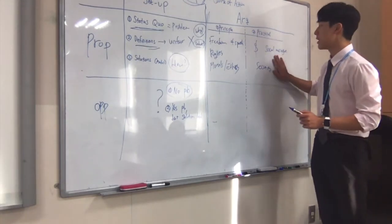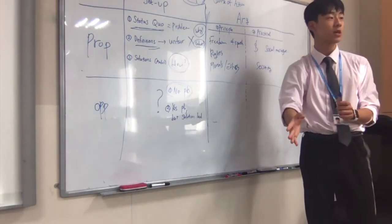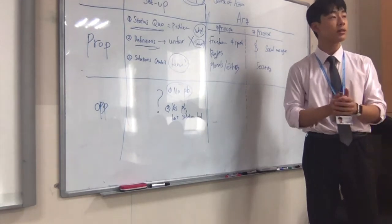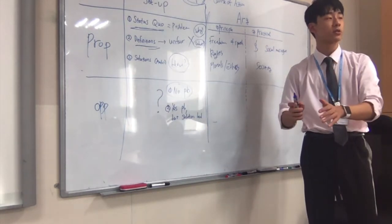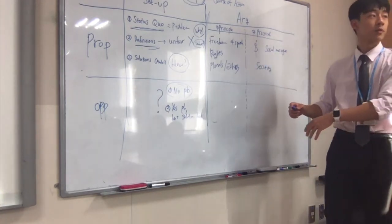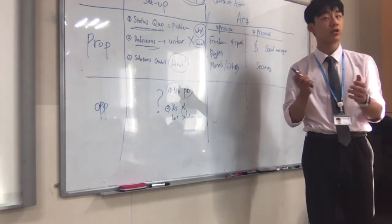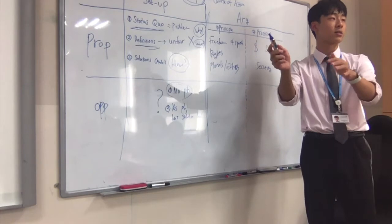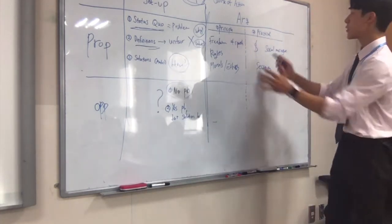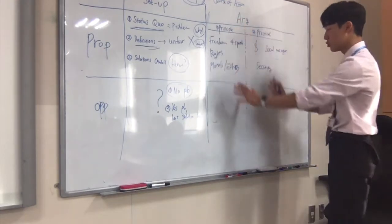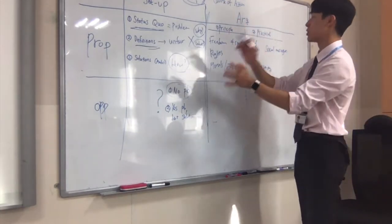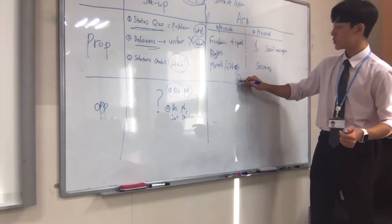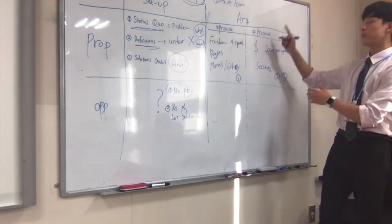So if the other side entirely destroys your practical arguments but doesn't touch upon your principle arguments, you can tell the audience and judge that your principle argument still stands because all of their rebuttals were based only on your practical arguments. That's why it's good to have these two parallel ways of constructing arguments. A really generic but effective way of constructing a case would be to make the first argument a principle argument and the second and third arguments practical arguments.